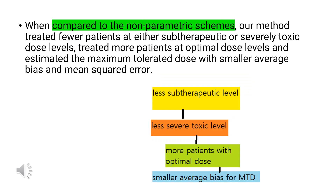When compared to the non-parametric schemes, our method treated fewer patients at either sub-therapeutic or severely toxic dose levels, treated more patients at optimal dose levels, and estimated the maximum tolerated dose with smaller average bias and mean squared error.